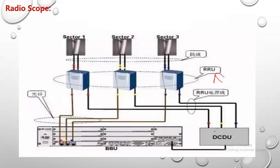There is a card or a unit called the DCDU, direct current distribution unit. This direct current distribution unit will give power to the RRU, will give power to the RRU.